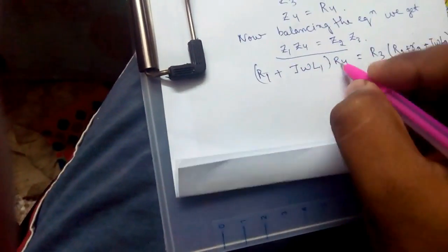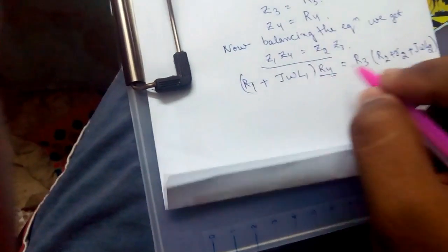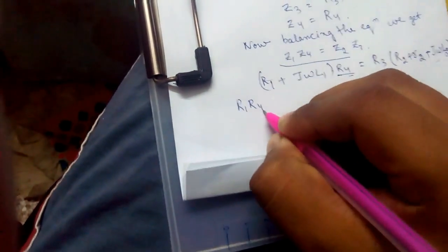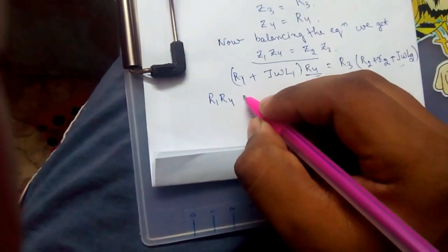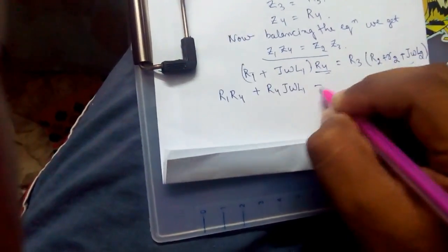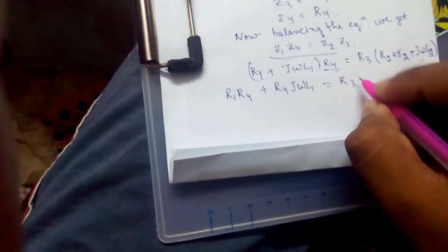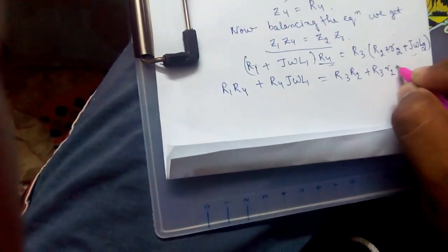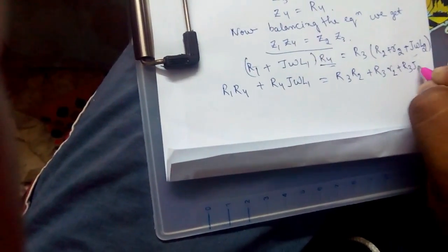Now, multiplying and simplifying the equation: R1 times R4 plus R4 j omega L1 equals R3 times R2 plus R3 small r2 plus R3 j omega L2. Now, equating the real terms.